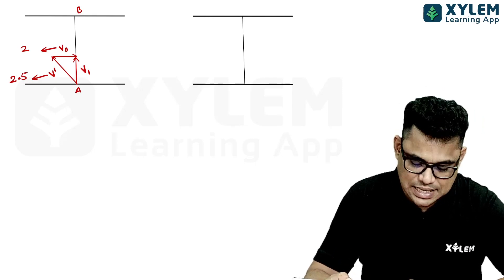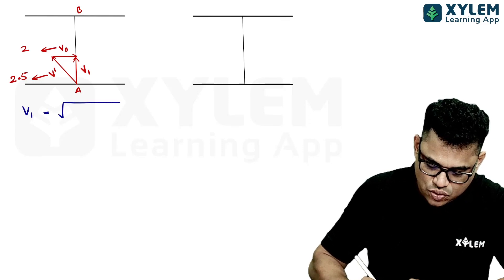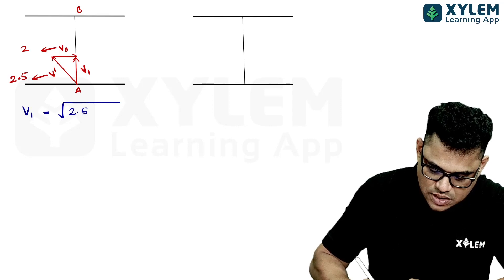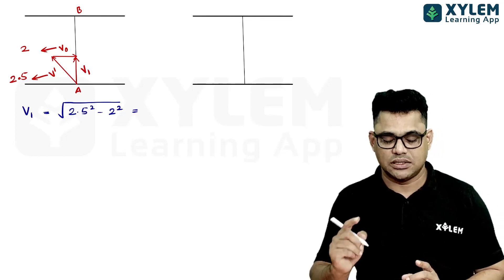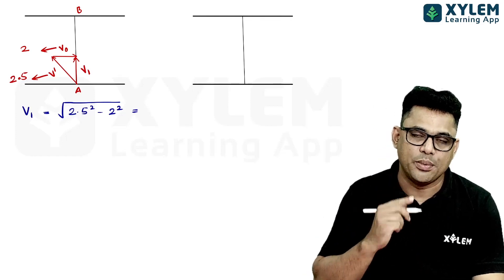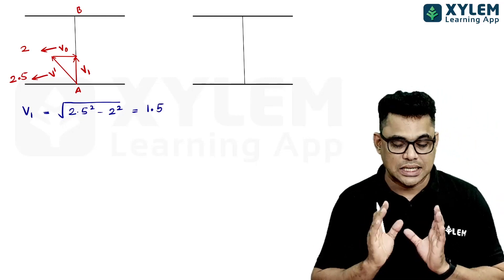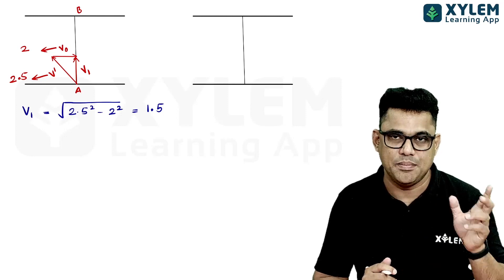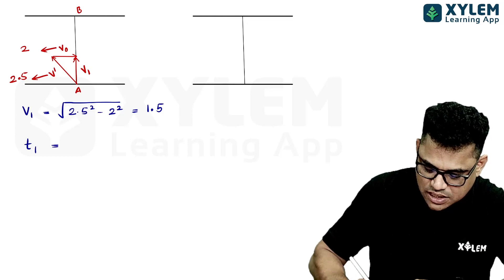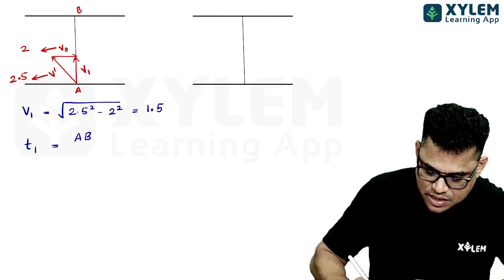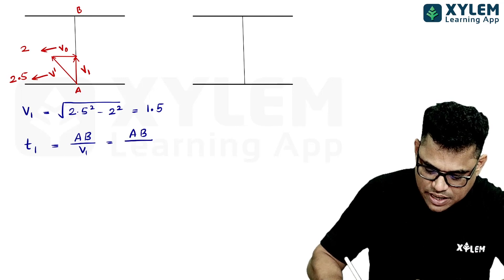Because it is a right angle triangle, V1 equals the square root of V dash squared minus V0 squared, which is root of 2.5 squared minus 2 squared. That gives 6.25 minus 4, which is 2.25, and the square root of 2.25 is 1.5. So V1 equals 1.5 km/h. The time taken by the first swimmer is AB divided by V1, that is AB divided by 1.5.